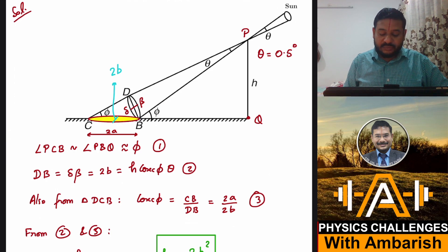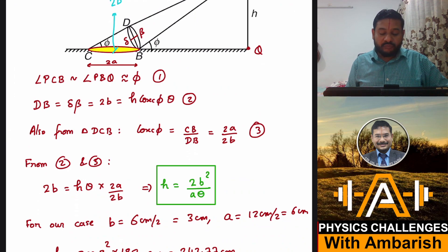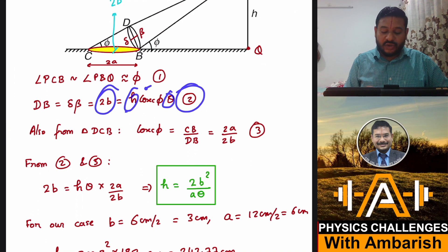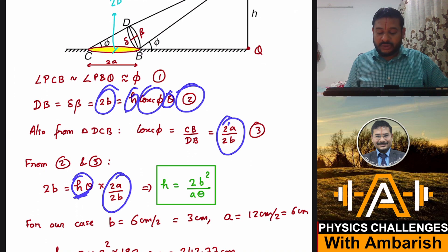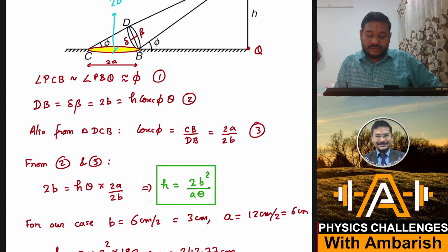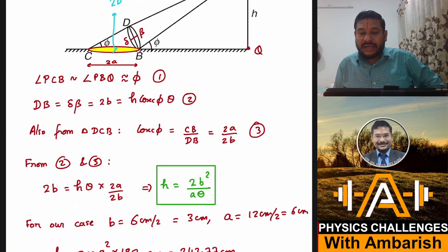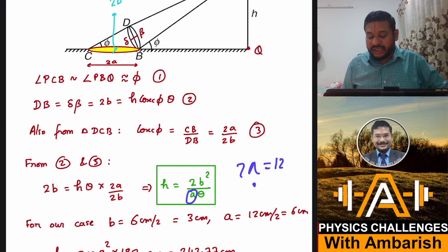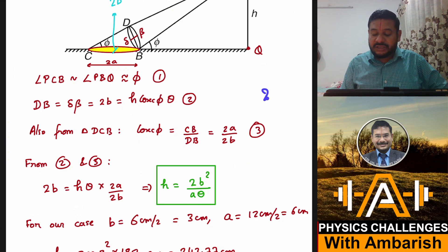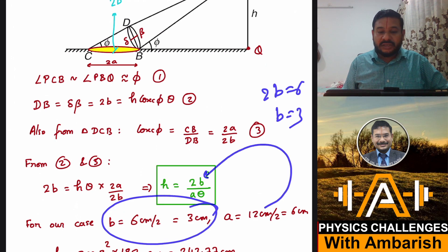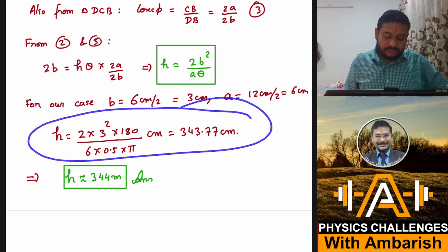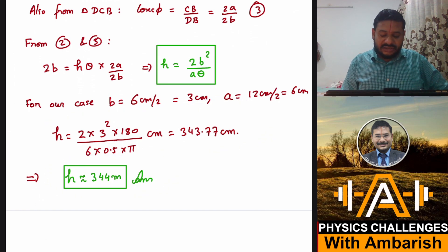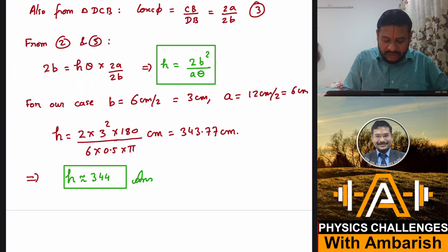Now that equation 3 is clear, it is simple to eliminate cosec phi from the two equations. From equation 2, 2B equals H times theta times cosec phi, substituting cosec phi as A over B gives 2B equals H times theta times A over B. Rearranging gives H equals 2B squared divided by A times theta. Plugging in the values: theta is 0.5 degrees converted to radians as 0.5 times pi over 180; A is 6 centimetre (since 2A is 12 cm); B is 3 centimetre (since 2B is 6 cm). The final answer comes out to be approximately 344 centimetre.